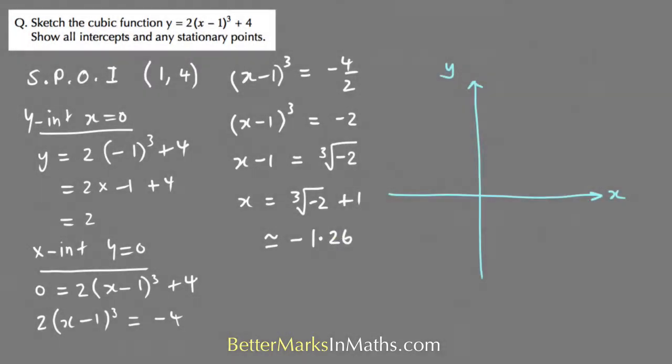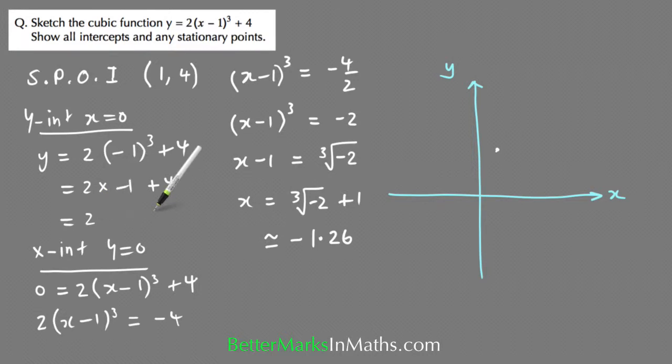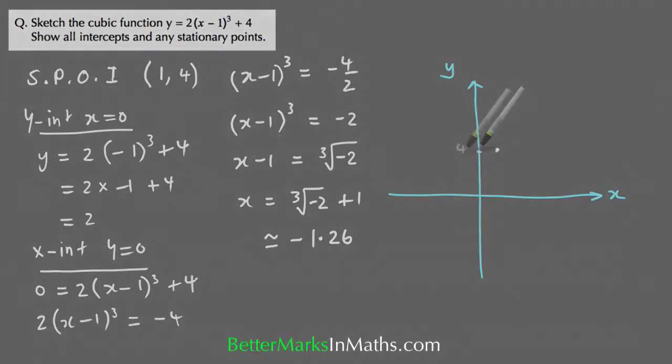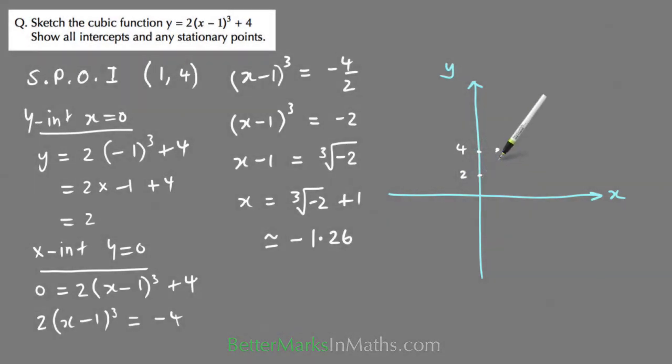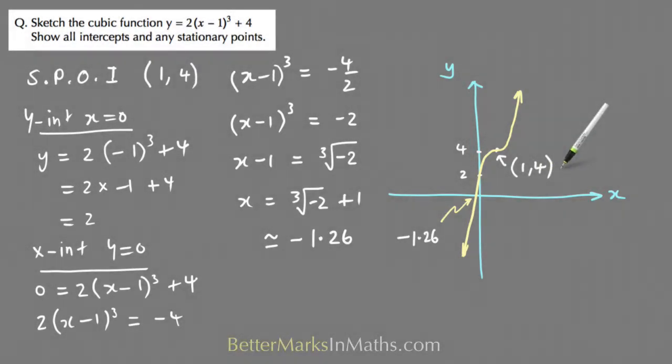Now I can put all of these on a set of axes and sketch the graph. Starting with the stationary point of inflection at 1 comma 4, the y-intercept is 2, so the graph is coming up through the x-axis heading off to minus infinity on the left and positive infinity. There's the y-intercept, this x-intercept at minus 1.26, and this is the stationary point of inflection 1 comma 4.